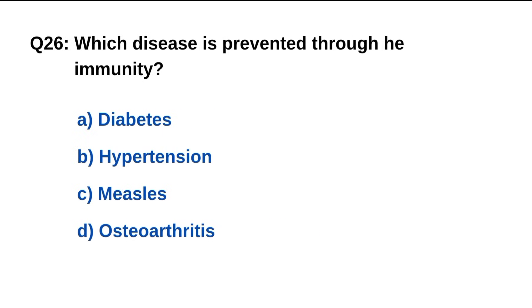Question number 26. Which disease is prevented through herd immunity? The right option is C: Measles.